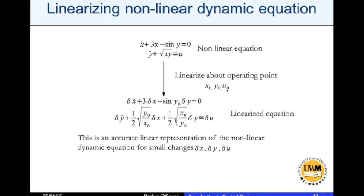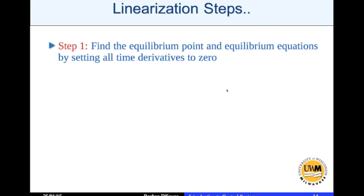So what's the step? The first step is to find the equilibrium point and equilibrium equation by setting all time derivatives to zero. So at the equilibrium point, all time derivatives are zero. What does that mean?